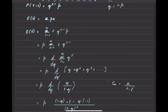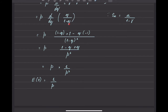So I can rewrite the summation of r times q^(r-1) as d/dq of the summation of q to the power r. That is a geometric series with first term q and ratio q as well. Since it is a diminishing series the value of q must be less than 1, so I can apply the sum to infinity formula: a/(1 minus r), which gives q upon 1 minus q.